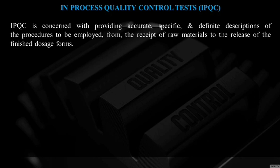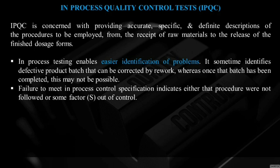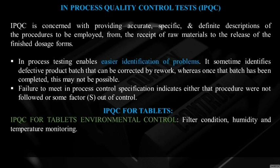In-process quality control (IPQC) is concerned with providing accurate, specific, and definite description of the procedures to be employed from receipt of raw material to release of the finished dosage forms. IPQC means controlling procedures involved in manufacturing of the dosage forms, starting from raw material purchase to dispatch of the quality product. In-process testing enables easier identification of problems; it sometimes identifies a defective product batch that can be corrected by rework, whereas once the batch has been completed this may not be possible. Failure to meet in-process control specifications indicates either that procedures were not followed or some factors were out of control.